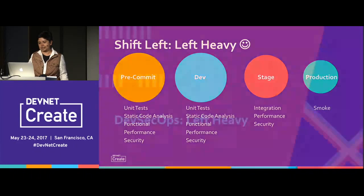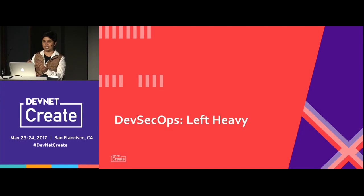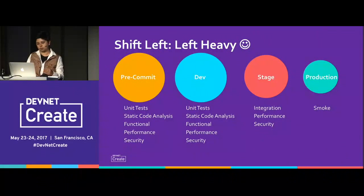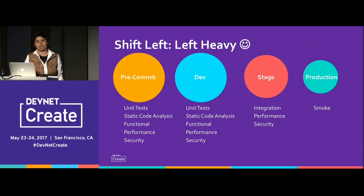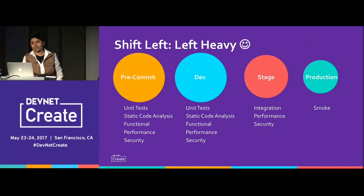DevSecOps means building security into the design. If you build a product first and then put it up for certification, it's already done — a bug can be called a feature at that point. It's very hard to go back to the whiteboard. So we have to be left-heavy, pulling upfront the things we typically do toward the end. Security and performance often stay disintegrated from the pipeline — there are stops and starts so those tests can be run outside the pipeline.